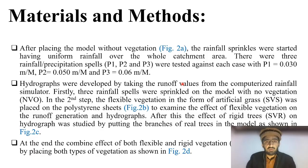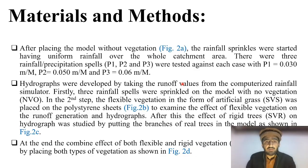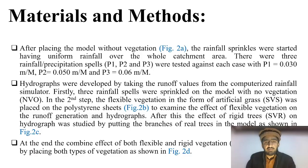After placing the model without vegetation, the rainfall sprinklers were started providing uniform rainfall over the whole catchment area. There were three rainfall precipitation spells: P1 at 0.03 meter per minute, P2 at 0.05 meter per minute, and P3 at 0.06 meter per minute. Hydrographs were developed by taking runoff values from the computerized rainfall simulator. Three rainfall spells were first applied to the model with no vegetation, then flexible vegetation in the form of artificial grass was placed on the polystyrene sheets to examine its effect on runoff generation.